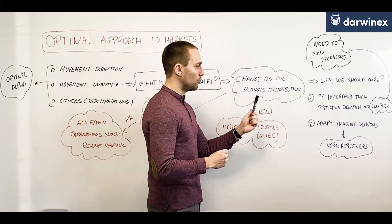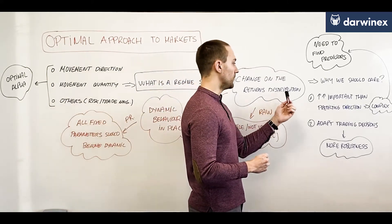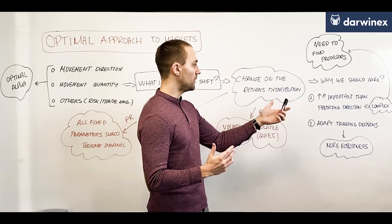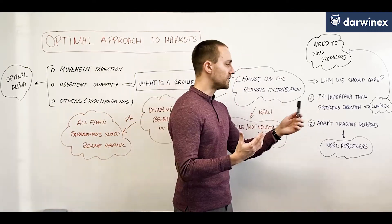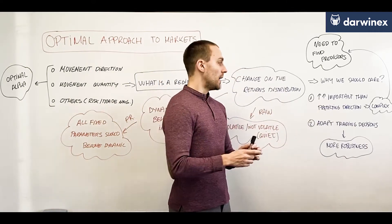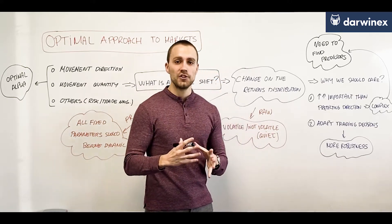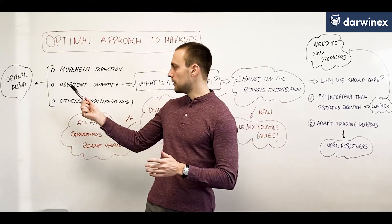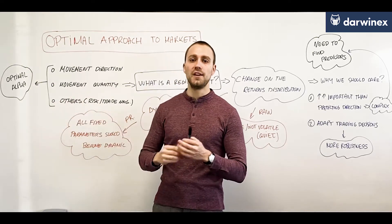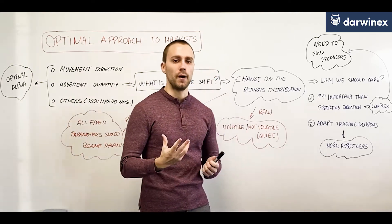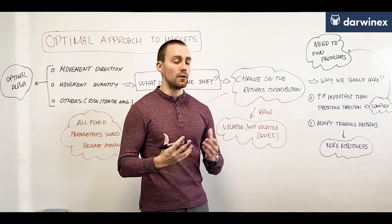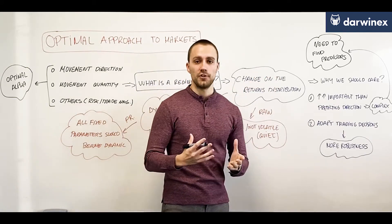The following question is: why should we care about this change in the returns distribution? It's much more important than predicting direction. Predicting direction is important to achieve that outcome of optimal alpha, but it's a more complex task because we have to find predictors — it's not just analyzing the current state of the markets.